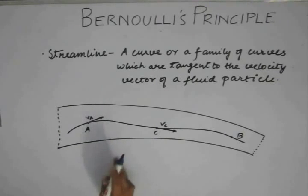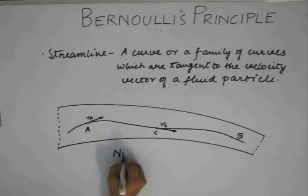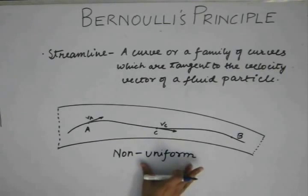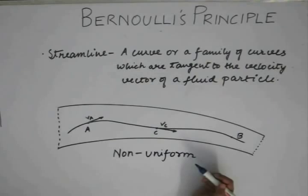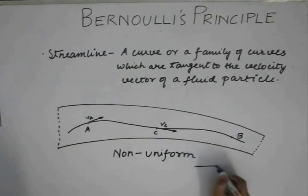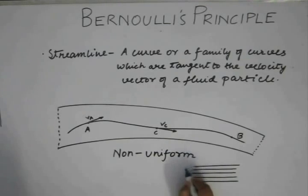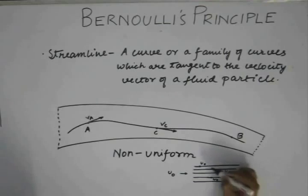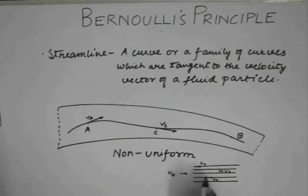Had the flow been uniform, the velocity at one point and at another would be the same. A simple example is when streamlines are parallel. Here, the fluid comes with velocity u0, and at every point along these streamlines the fluid has velocity u0 — this is an example of uniform flow. If u0 is also constant in time, then the flow is steady as well.